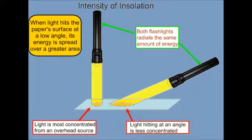At a lower angle, the energy is spread over a greater area, and you can see that larger disk from the flashlight on the right on the paper. The light hitting at an angle is less concentrated, so every part of the paper that's struck by the low angle flashlight receives less energy.